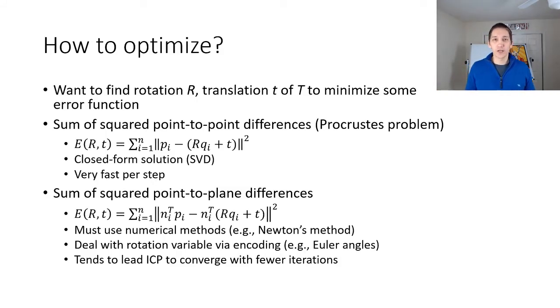The last difference between ICP algorithms is how to actually perform the single step optimization of trying to improve the matching distance between the source and the target with the fixed correspondences already determined. This requires us to define the error function a bit more precisely so that we can develop good algorithms to try to minimize it. It turns out that for the sum of squared point-to-point differences problem, this is also known as the Procrustes problem, there is a very fast closed form solution to figuring out the optimal translation and rotation. The basic idea is we will find the translation to align the point sets together, and then we can use the singular value decomposition in a very specific way to align the primary axes of the point sets. This is very fast per step, it takes order n time, and it only takes a single iteration to find the global optimum.